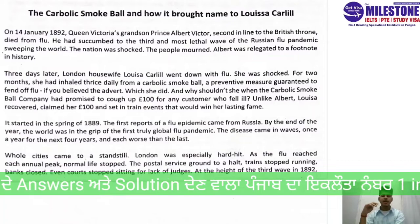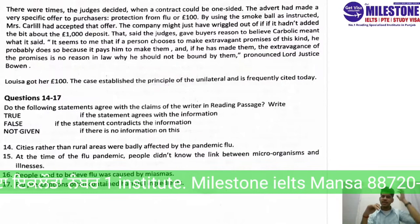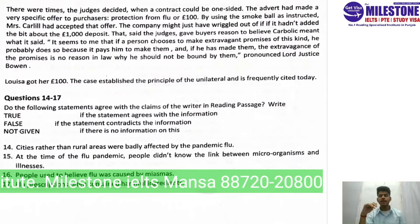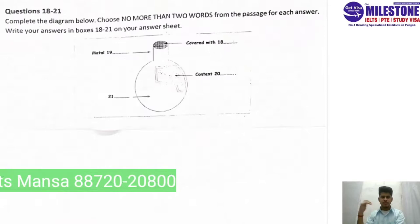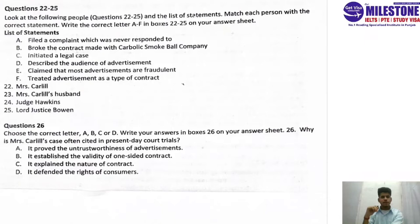Now let me give you the types of questions. The first question type is True, False, or Not Given. A true statement is one we agree with; a false statement contradicts; not given means the information is absent. The second question type is diagram labeling — no more than two words. Next we have a list of statements, and the last question is MCQ.